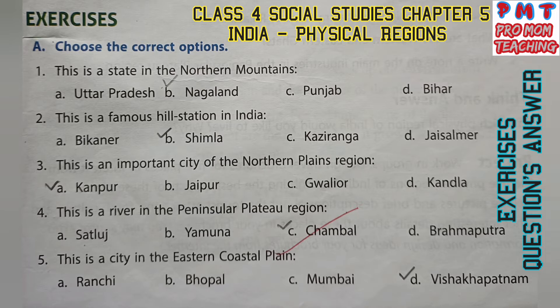Choose the correct options. First, this is a state in the northern mountains — Tick B: Nagaland. Second, this is a famous hill station in India — Tick B: Shimla. Third, this is an important city of the northern plains region — Tick A: Kanpur. Fourth, this is a river in the peninsular plateau region — Tick C: Chambal.